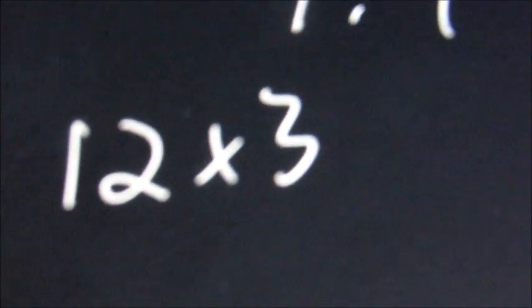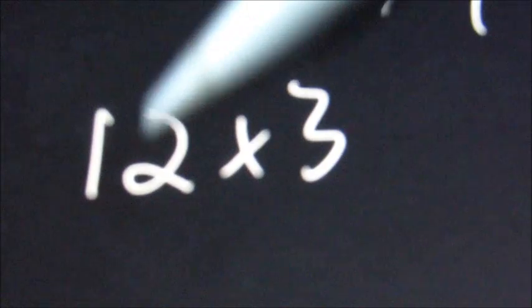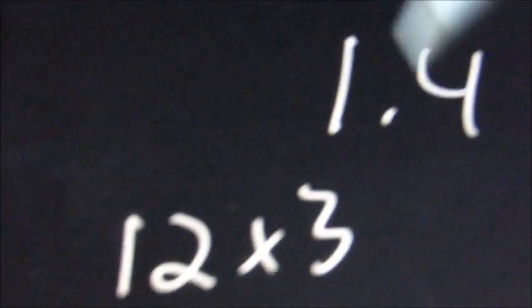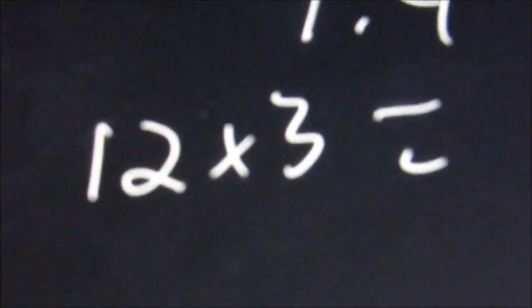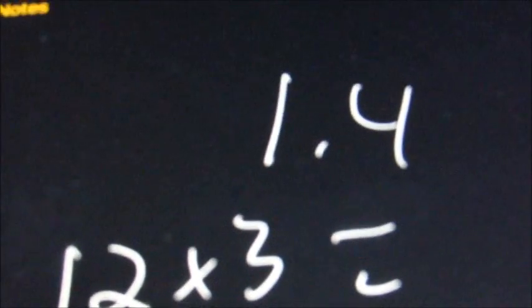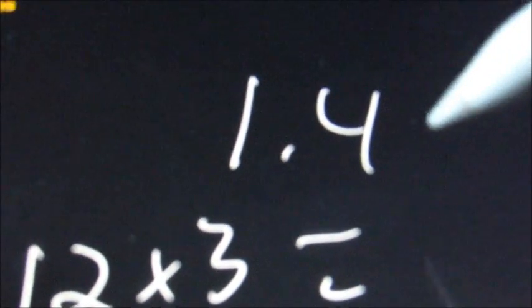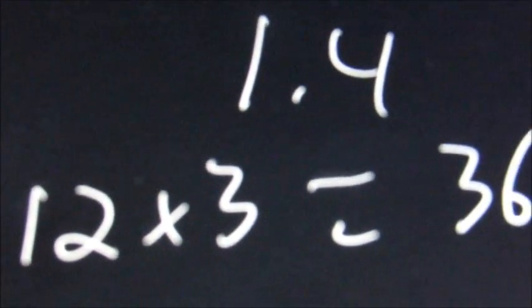Remember multiplying is basically adding. So this is saying that you're adding 12 three times. But we don't need to worry about that, just do it: 3 times 12 equals 36.